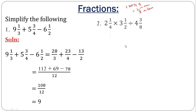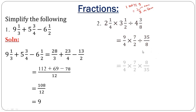What if you have multiplication and division? First, change mixed numbers to improper fractions. Here we get 9 over 4, 7 over 2, and 35 over 8. Whenever you have a division, it's always advised to change it to multiplication. When you do that, the fraction following it inverts — it turns to its reciprocal. Reciprocal means the denominator becomes the numerator and the numerator becomes the denominator.